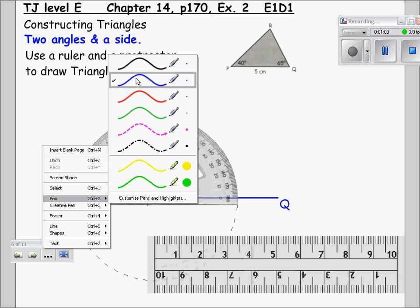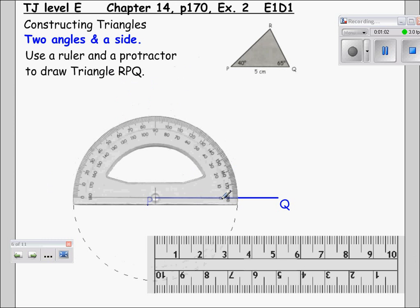Because the angle from P is 40 degrees it is going in an anti-clockwise direction. That means we will be using the inside numbers of the protractor. Mark at the 40 degree mark with a point.